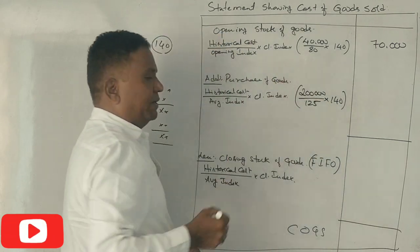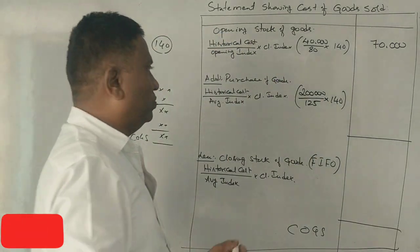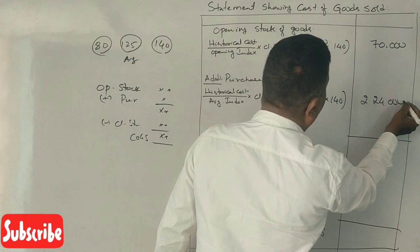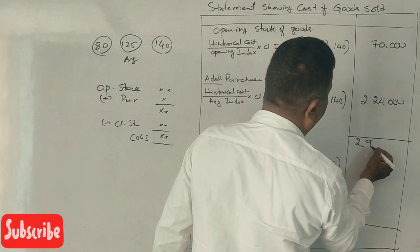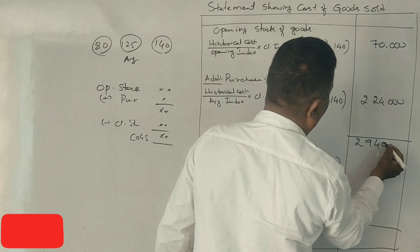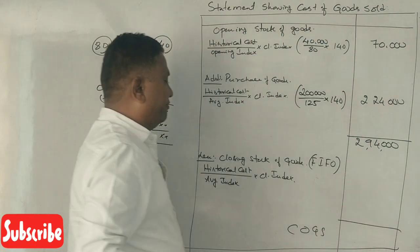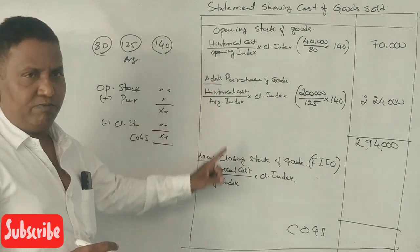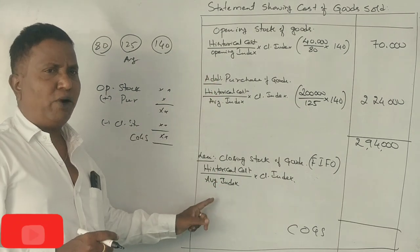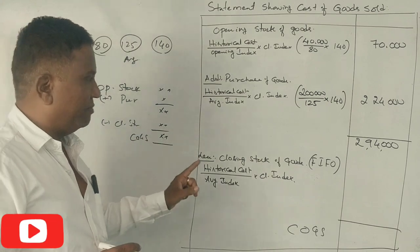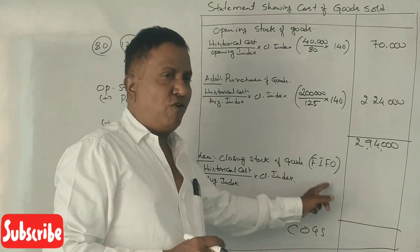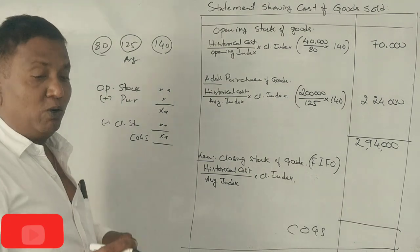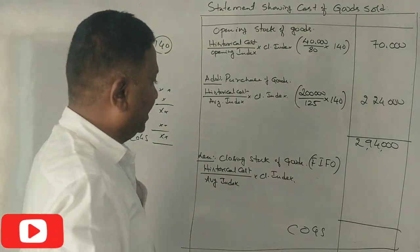The current purchasing power figure is $2,24,000. Adding the adjusted purchases gives $2,94,000. This is using the FIFO method. For closing stock under the FIFO method, the value is $30,000.